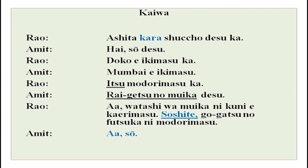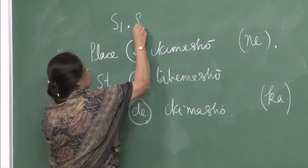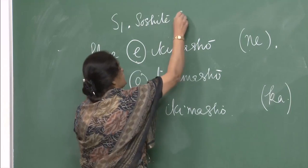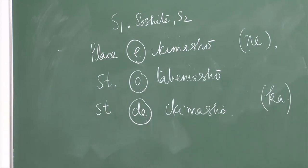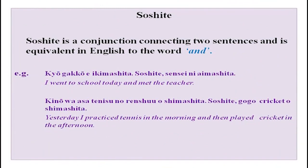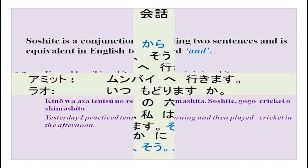With soshite: sentence 1, full stop, soshite sentence 2 — unlike the English 'and'. For example: kyo gakko e ikimashita. Soshite sensei ni aimashita — I went to school today and met the teacher. Similarly: kino wa asa tennis no renshu wo shimashita. Soshite gogo cricket wo shimashita — yesterday I practiced tennis in the morning and then played cricket in the afternoon. So you can see the difference between soshite and 'and'.